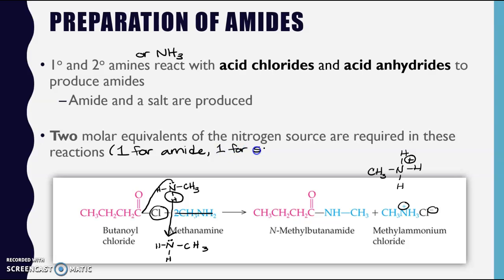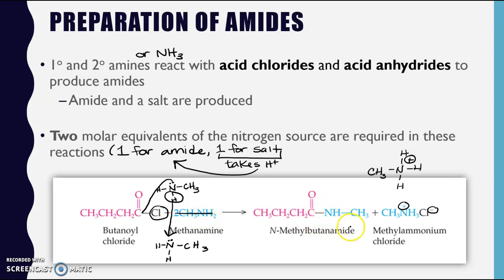So one of the amines goes to making the amide, and the other nitrogen-containing compound goes to making the salt. That second amine takes a hydrogen ion - a proton - from the first amine that goes to make the amide. Notice we're down a hydrogen: we had two hydrogens on the nitrogen, and we're down to one in our amide structure. That's how we make our amide and why we end up with an ammonium chloride salt.